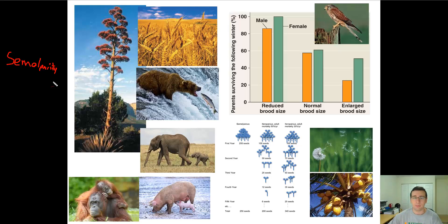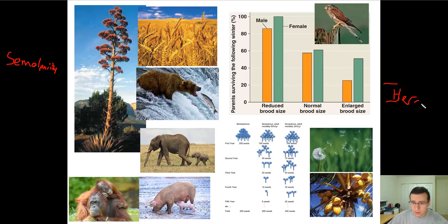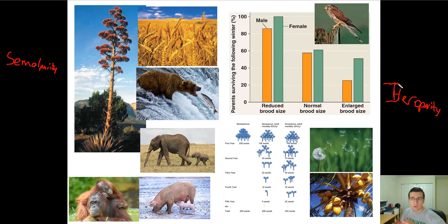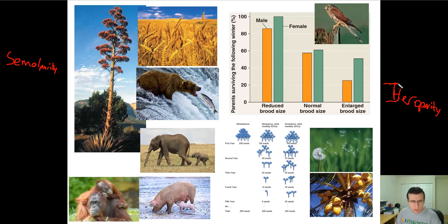You will also see the opposite of that in nature, which is called iteroparity. Iteroparity is when instead of having one all-out event where you try your best to have as many offspring as possible and hope that a few of them survive, iteroparity is when the organism has a careful reproductive event. It has only a few throughout its life, but makes sure that each of these events increases the chances of each offspring surviving. For example, look at large mammals like bears, pigs, elephants, and primates.